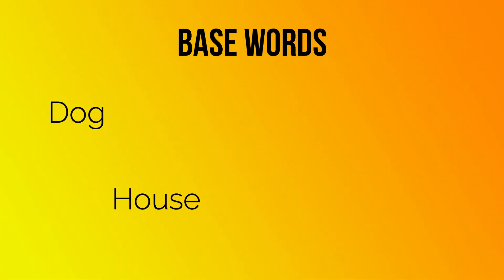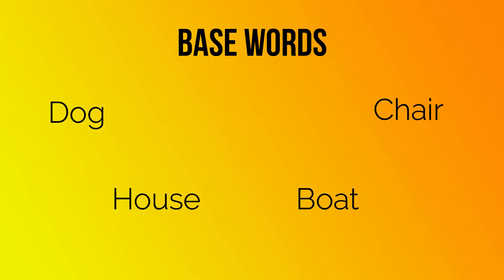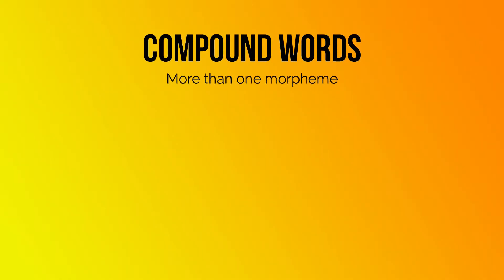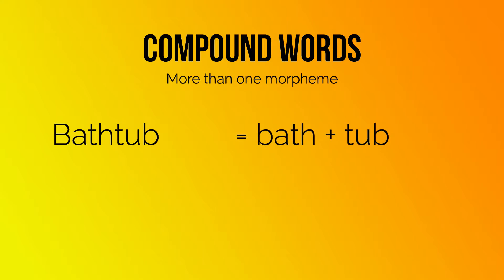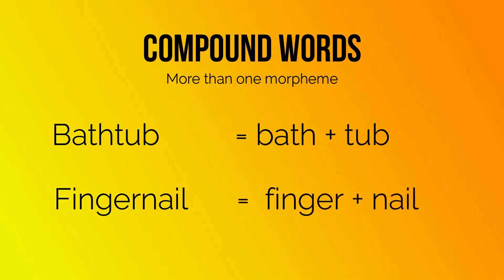Take a look at these four words: dog, house, chair, boat. These words are meaningful units. When you see that word, you're able to make a picture in your head of what that word means. If you have two morphemes together, you have a compound word, like bathtub — a combination of bath and tub — or fingernail, a compound word combined from finger and nail.